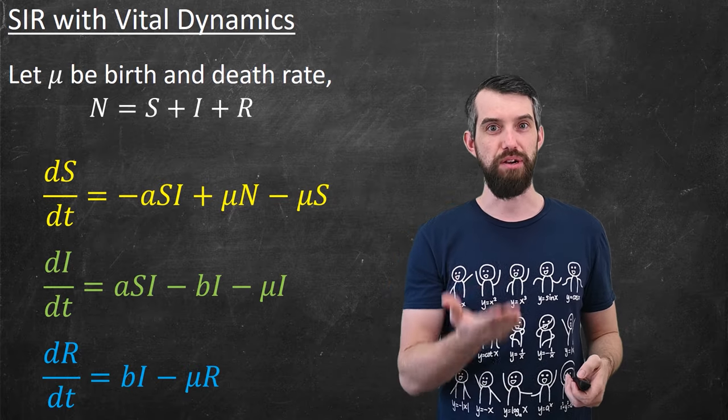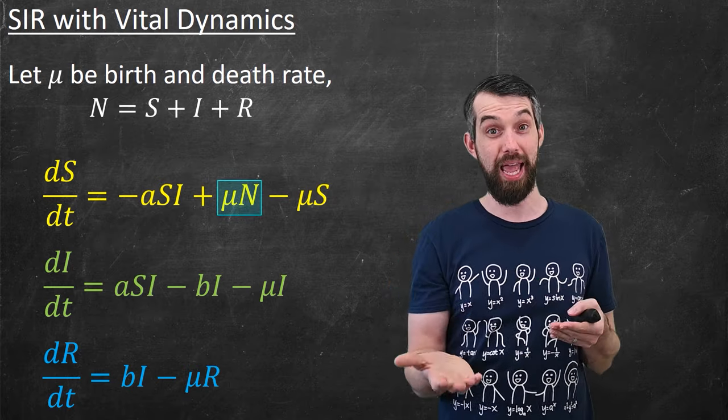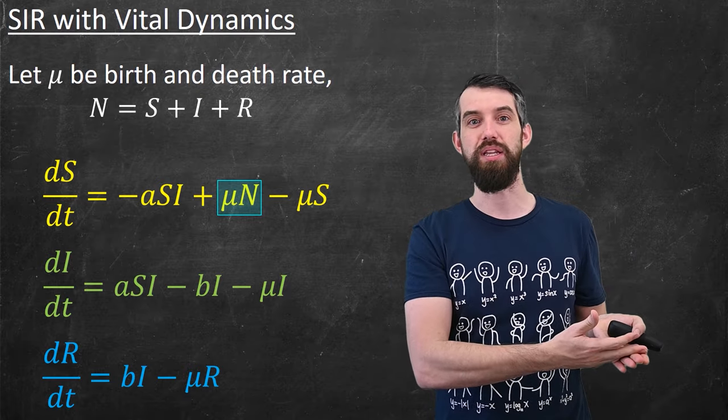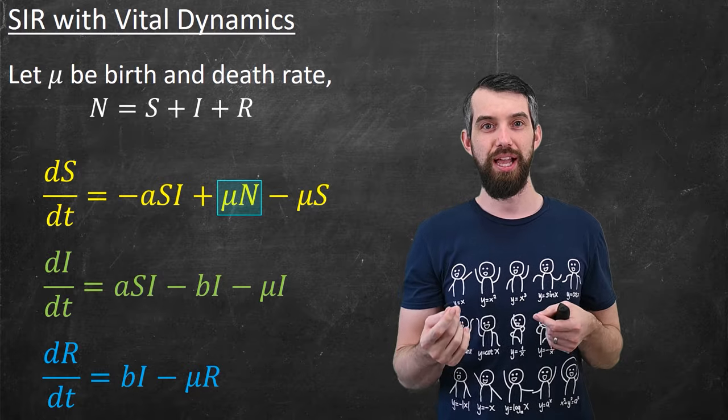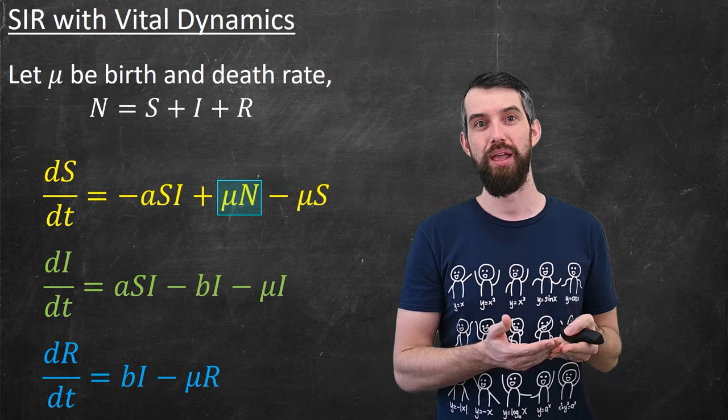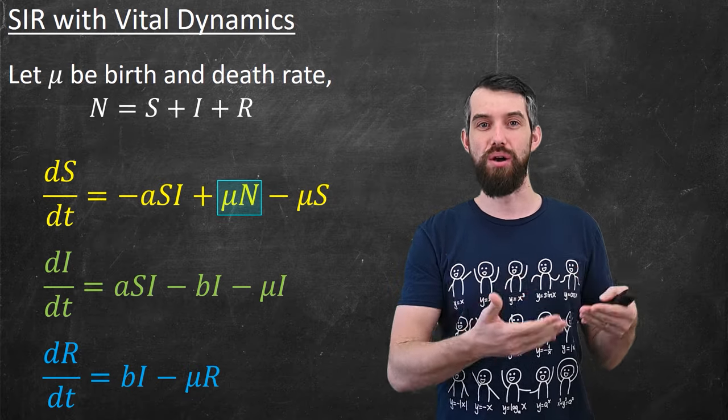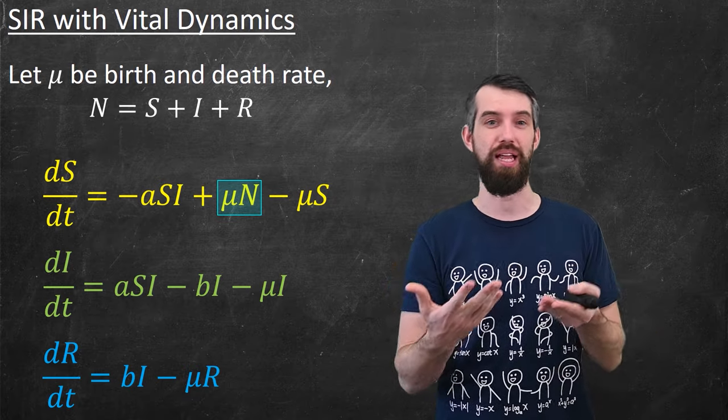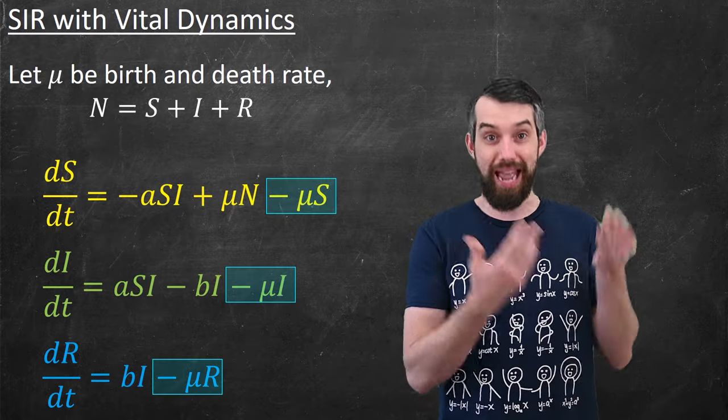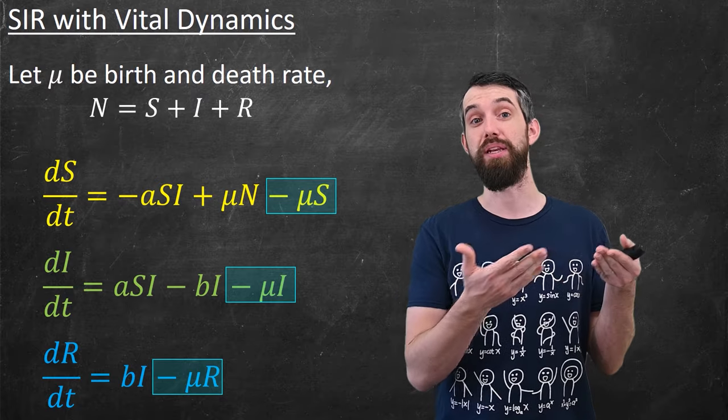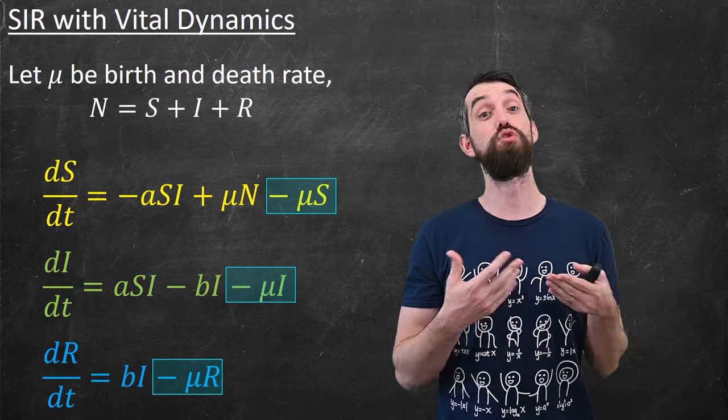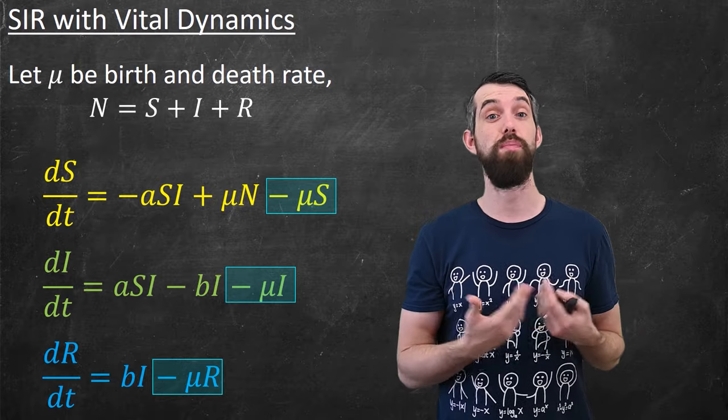There's a bunch of new terms here. The first term I have is a plus mu times n. And the idea here is that all new births become susceptible, as we saw in the previous diagram. And as a result, anybody in any of the three categories, so the n which represents sum of them, with the proportionality constant mu could give birth and create a new human in the susceptible category. And then I add these three other terms that refer to people passing away naturally, and they're proportional to the number of people in each of those three different categories respectively.